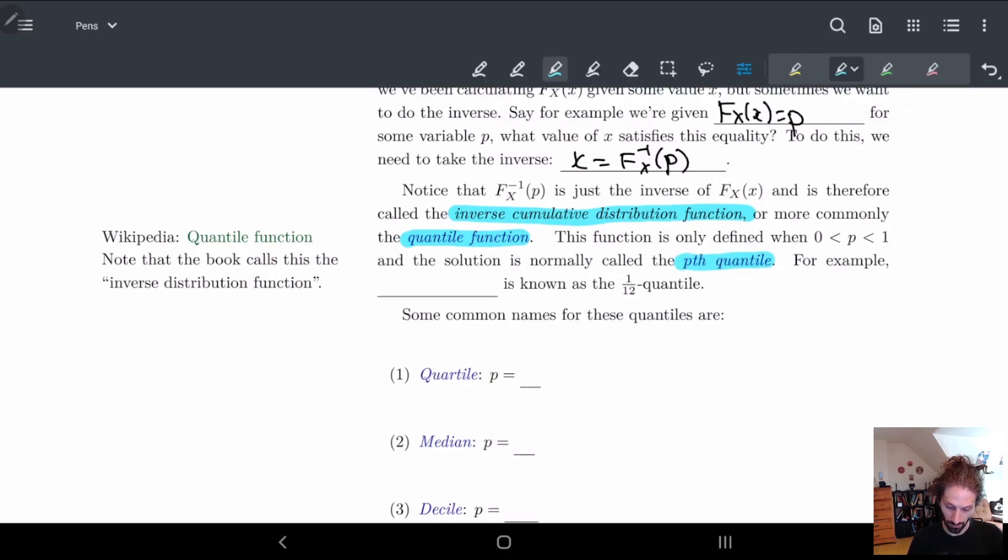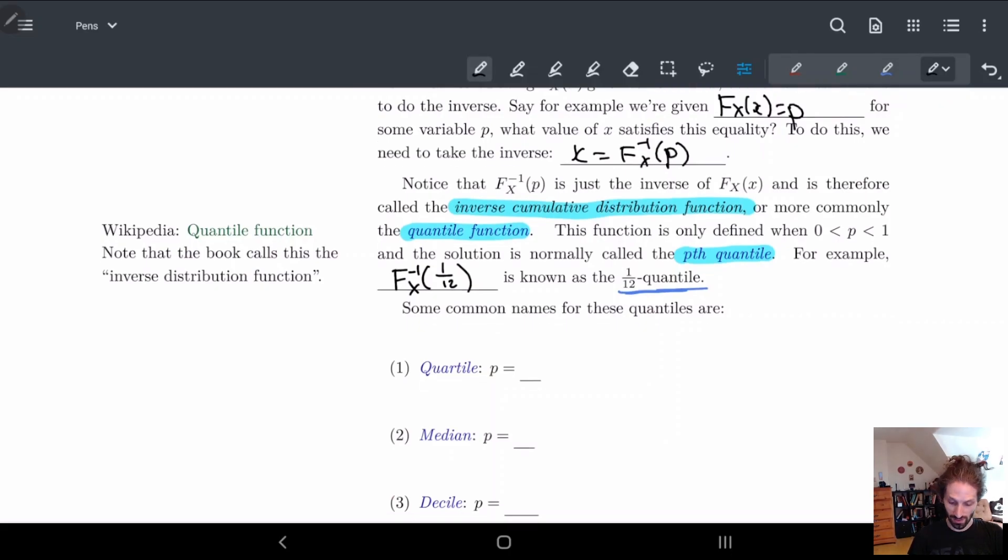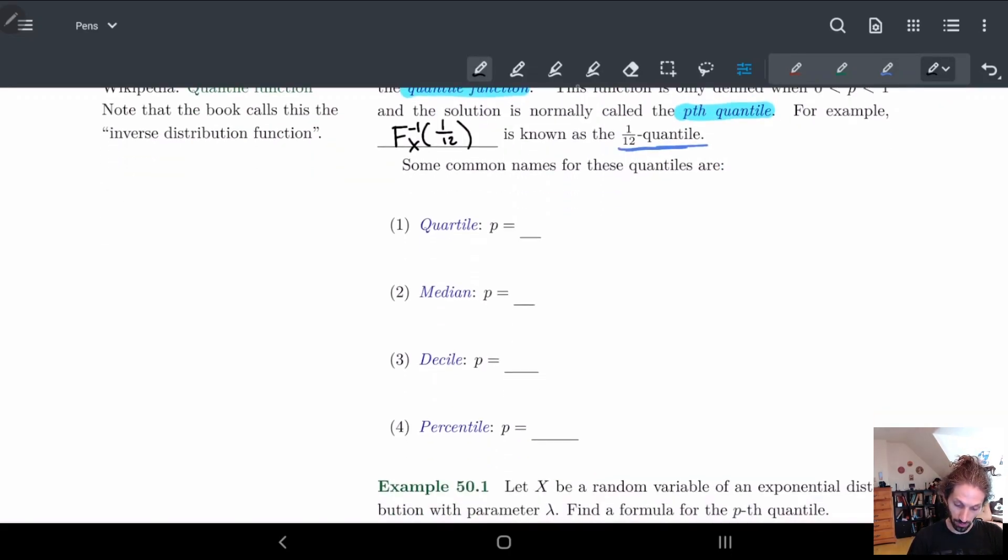The solution is normally called the pth quantile. In other words, if I want to do the twelfth quantile, I just plug in 1/12. There are some standard quantiles that people talk about regularly: quartile, median, decile, and percentile. Quartile is basically when p is equal to one-fourth. So there's the first quartile, which is one-fourth, second quartile is two-fourths, third quartile is three-fourths, etc.